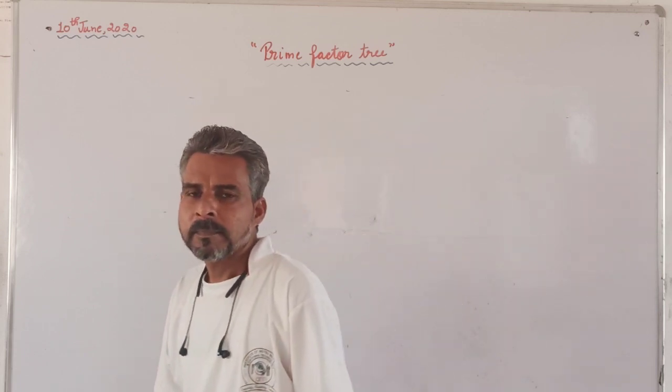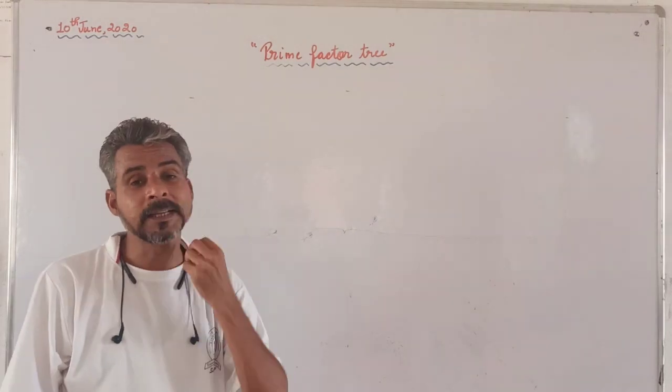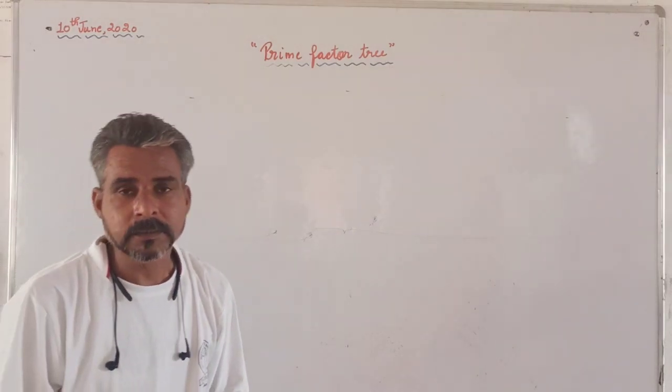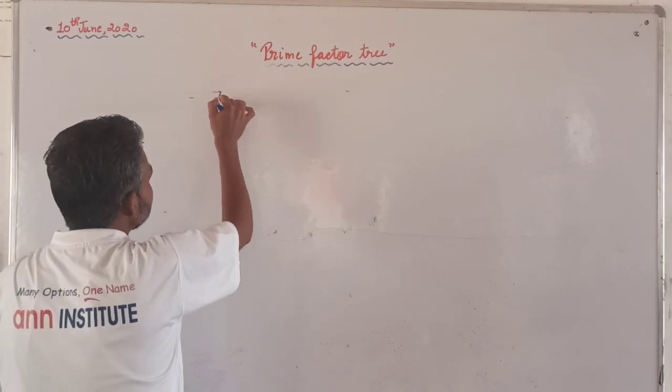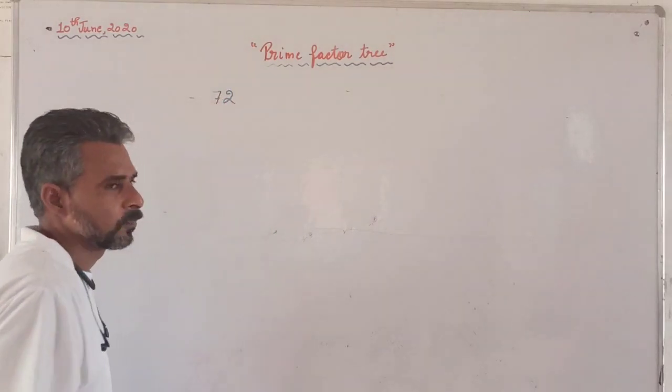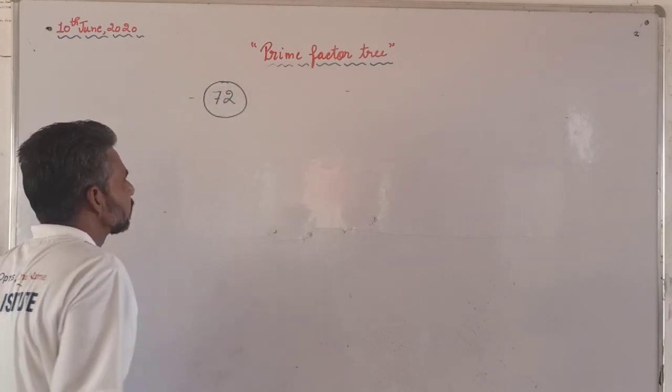A factor tree contains the prime factors. So for example we are making the number 72. Now we are talking about the factor tree of 72.